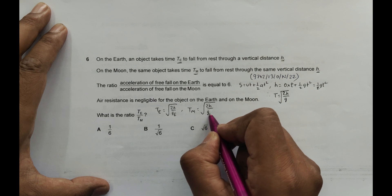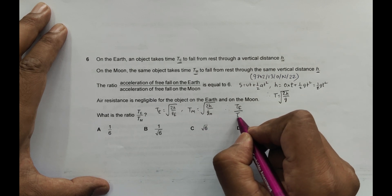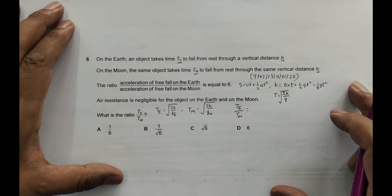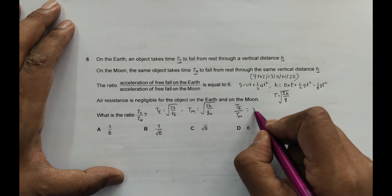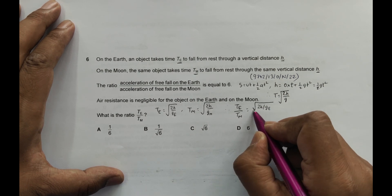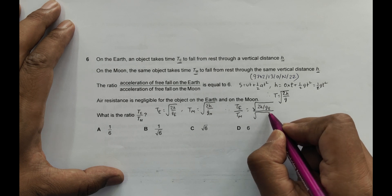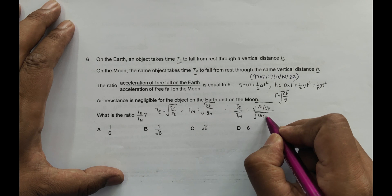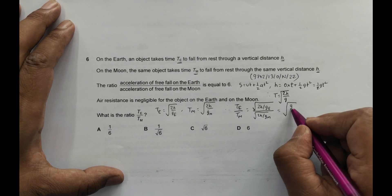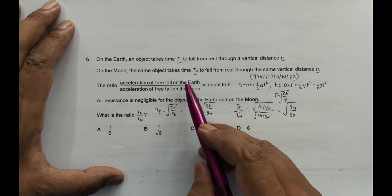Therefore, Te by Tm should be equal to, if I do the mathematics here properly, the square root of 2h by ge divided by the square root of 2h by gm. This gives the square root of gm by ge.